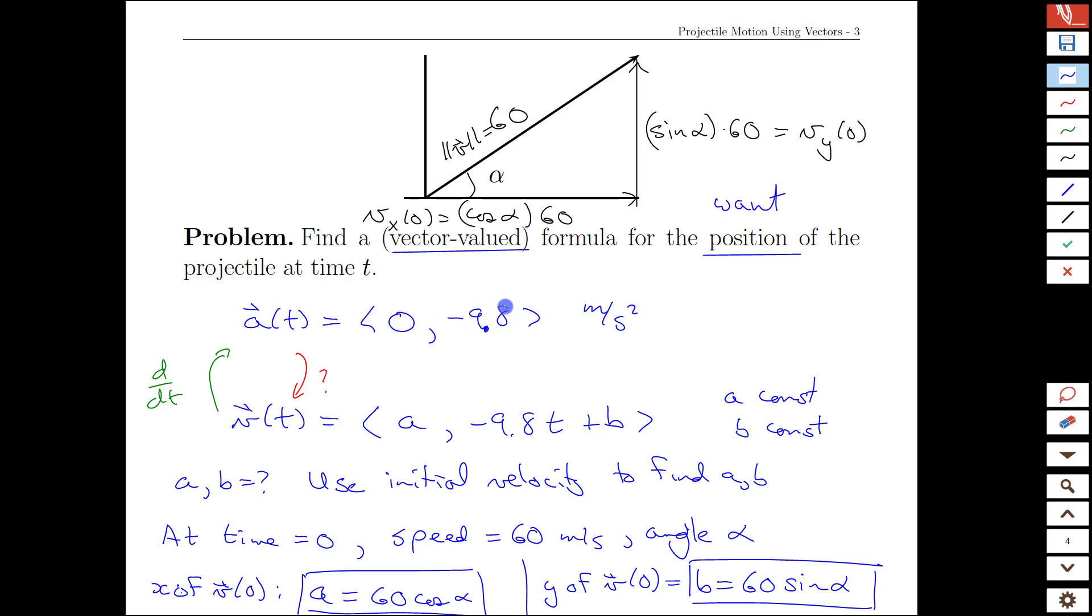So we started with our acceleration, knowing that only gravity is acting, we were able then to work backwards through derivatives to get a formula for the velocity, which is a little general, but then we can inform that choice by knowing about the starting point for the trajectory, particularly the initial velocities here. So let's add these a and b values to our formula on the next page.